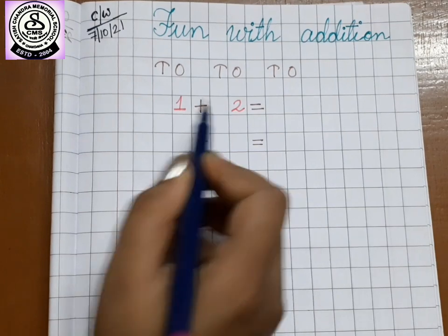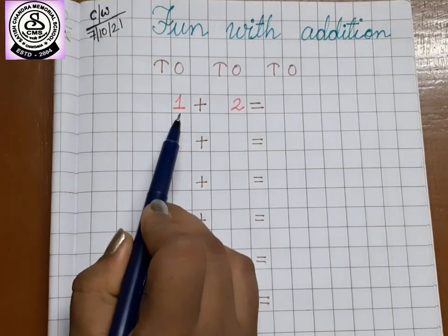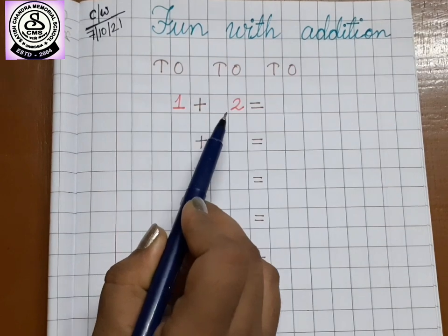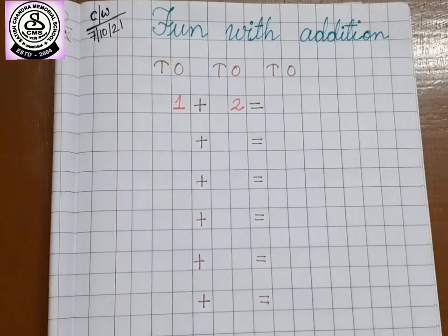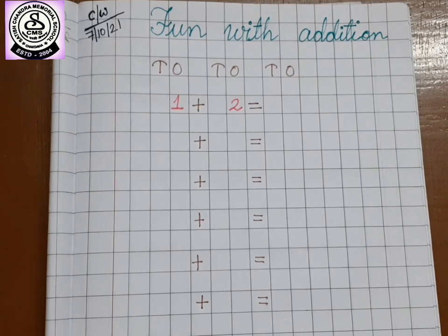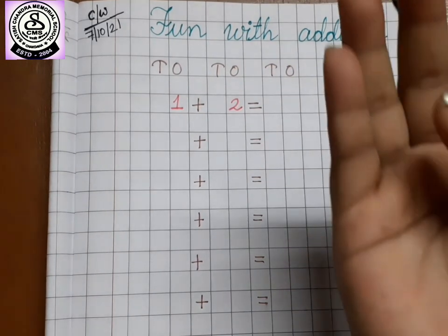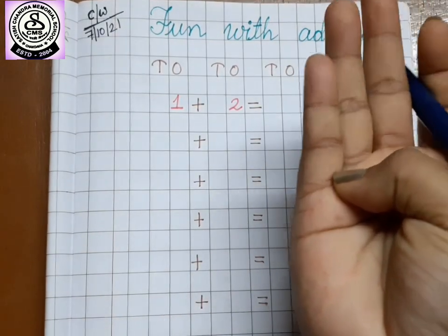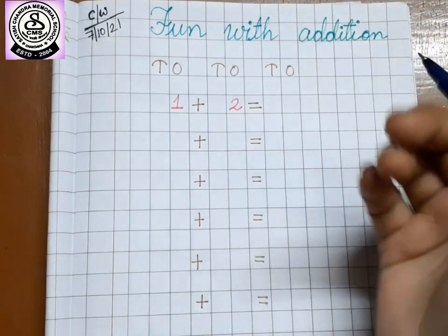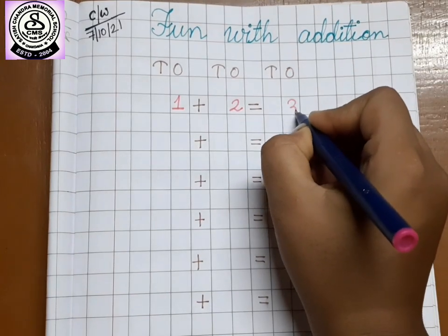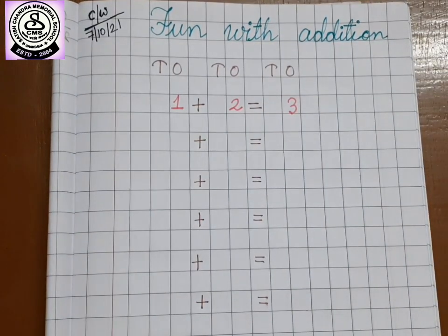So, one plus two. First time we rolled and got one. That became the first number. Then we got two. So, it became the second number. Now, tell me one plus two. What will be the answer? After one, if we go two house, we will have two, three. So, let's write three here. Follow one sentence and write it down.